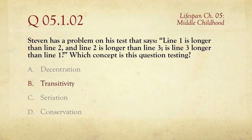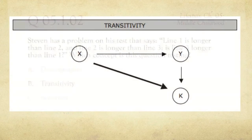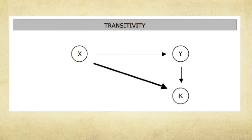The answer to this one is B, transitivity. We've got a little chart here that shows that if X is greater than Y and Y is greater than K, then X is also greater than K. It's a good mathematical concept.